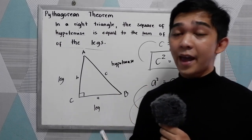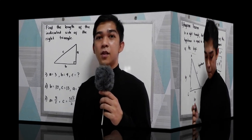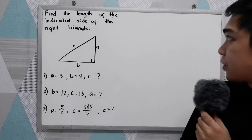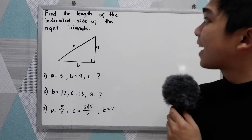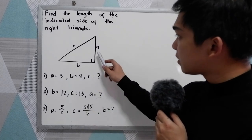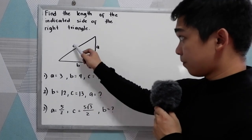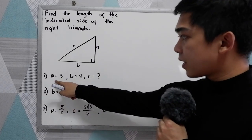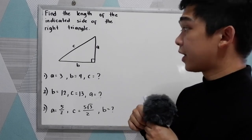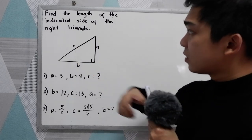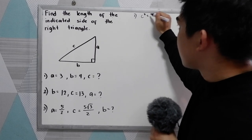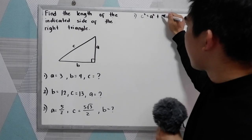To apply the theorem, let's have exercises. Find the length of the indicated side of the right triangle. We have sides a, b, and c, where c is our hypotenuse. For number 1: if a equals 3 and b equals 4, find the value of c. Since c is our hypotenuse, we use the formula c squared equals a squared plus b squared.